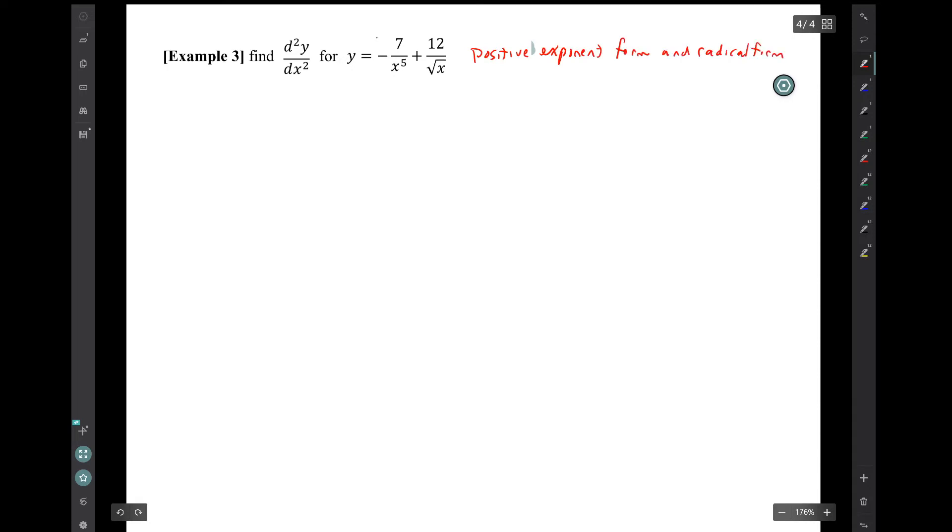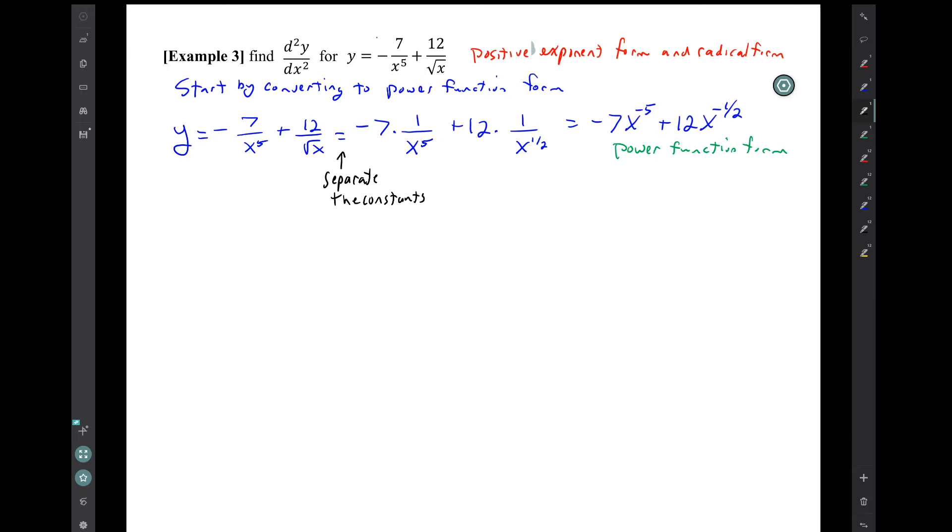So before finding the derivative, we need to convert to power function form. Notice that I did the conversion in two steps. In the first step, I simply separated the constants from the stuff involving the variables. And then in the second step, I dealt with converting to power functions.